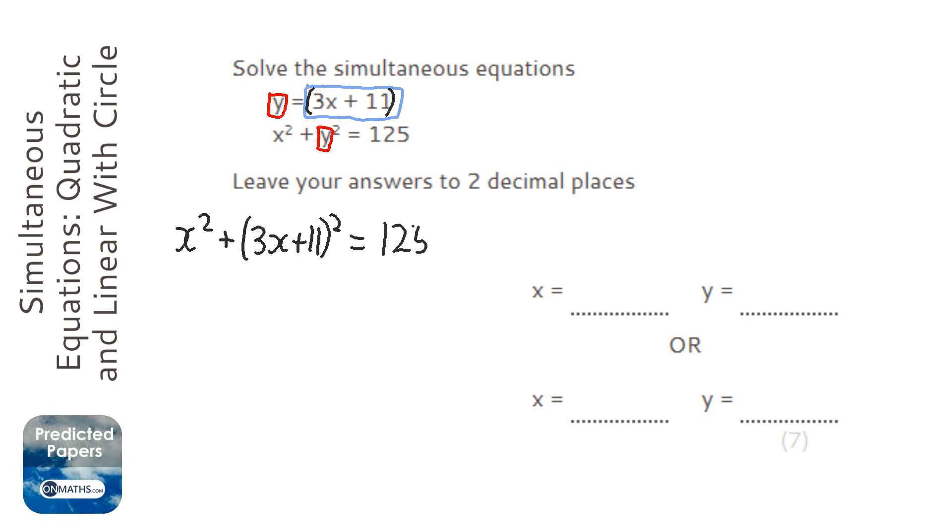And now I need to rearrange this so that I've got a nice quadratic. So the first thing I'm going to do is expand that bracket. So I'm going to do 3x times 3x is 9x squared.